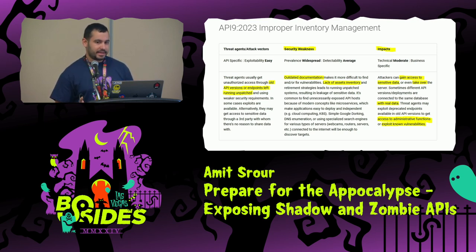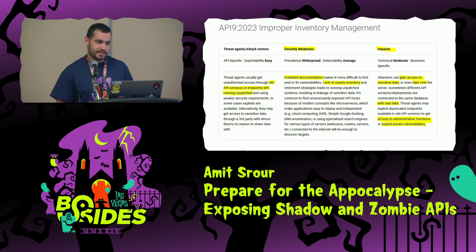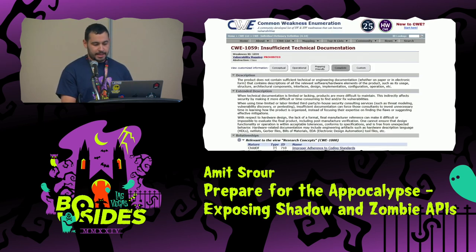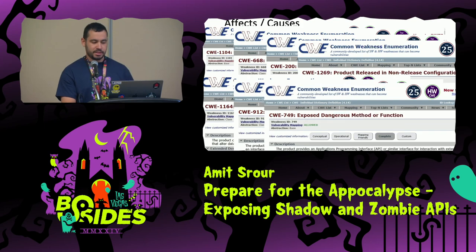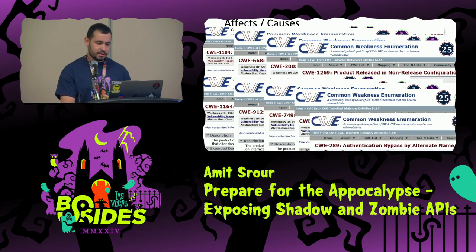Sometimes they host real data. For example, if as a developer I put out a QA environment with real data and forget to delete it and it's still being exposed, those are real risks. Some outdated systems will be a risk because they host vulnerabilities. There are many CWEs that can be considered as part of this weakness, depending on the business logic or how it's implemented.